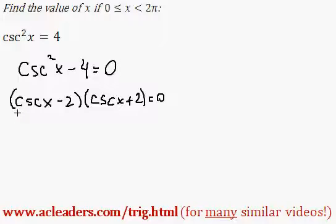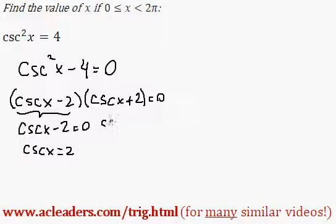That's going to give us cosecant of x minus 2 is 0, so cosecant of x is equal to 2. Or cosecant of x plus 2 equals 0, so cosecant of x equals negative 2.